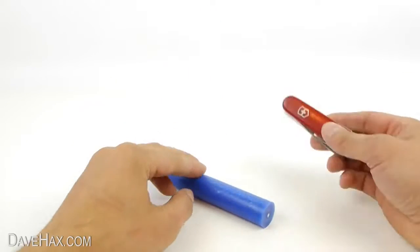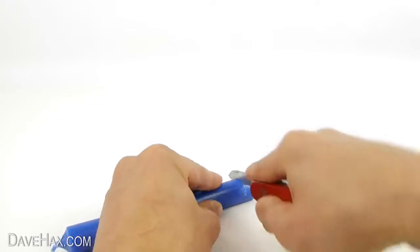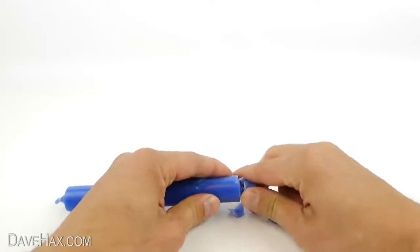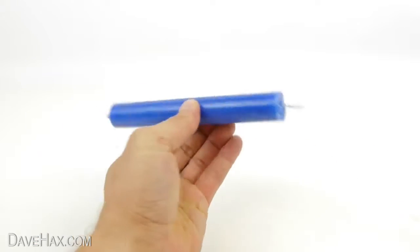Start by taking a candle, then using a sharp knife carefully remove some of the wax from the bottom of the candle to expose the wick. It should look like this.